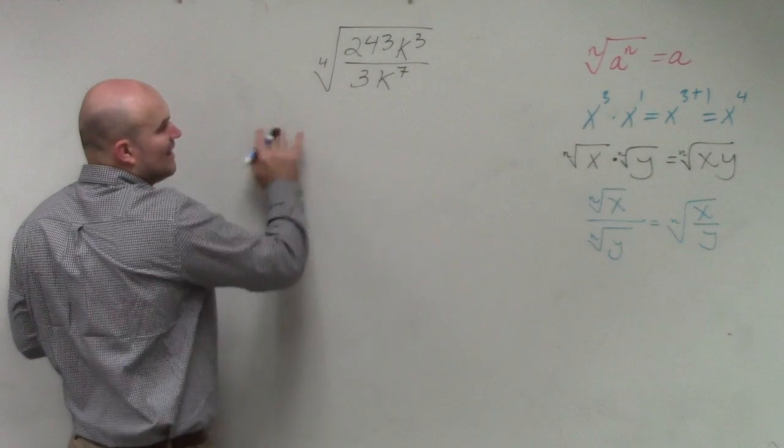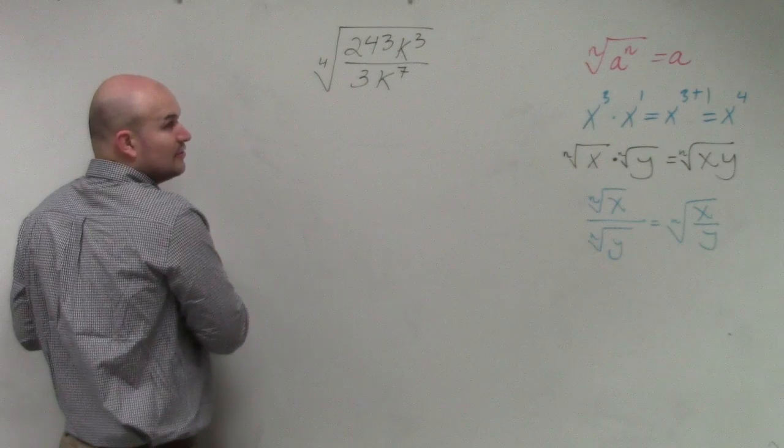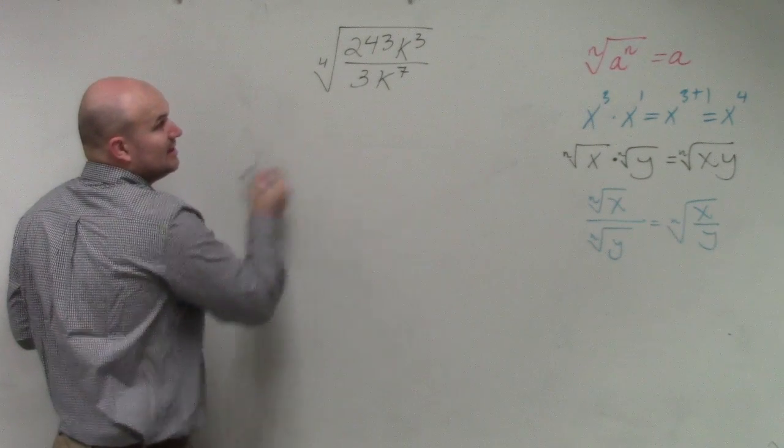And if you look at this as simplifying, I can divide 3 into 243, correct? 3 into 243 is going to be 81.